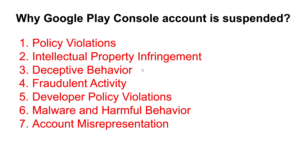Number seven is account misrepresentation — providing false or misleading information during account setup or app submission. Make sure when you submit the app, you provide data that your app actually covers. Write a description that includes only functionalities that are present in the app. If a functionality is not present and you write it in the description, it will be considered misrepresentation. This also covers multiple account violations: creating multiple accounts to evade suspension or termination.